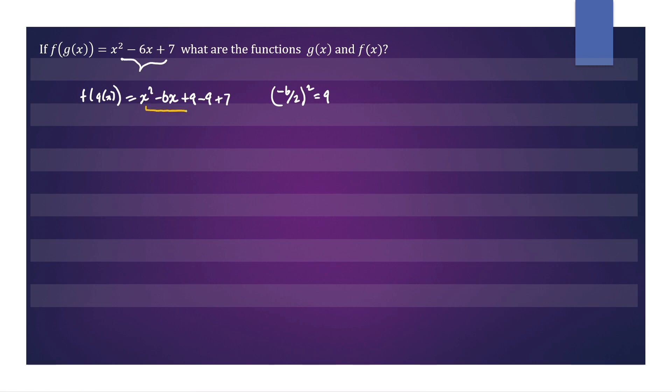So now we have a completed square here. So f(g(x)) equals x minus the square root of 9 is 3, all squared. Negative 9 plus 7 is negative 2. So now we've just changed the form of the function.